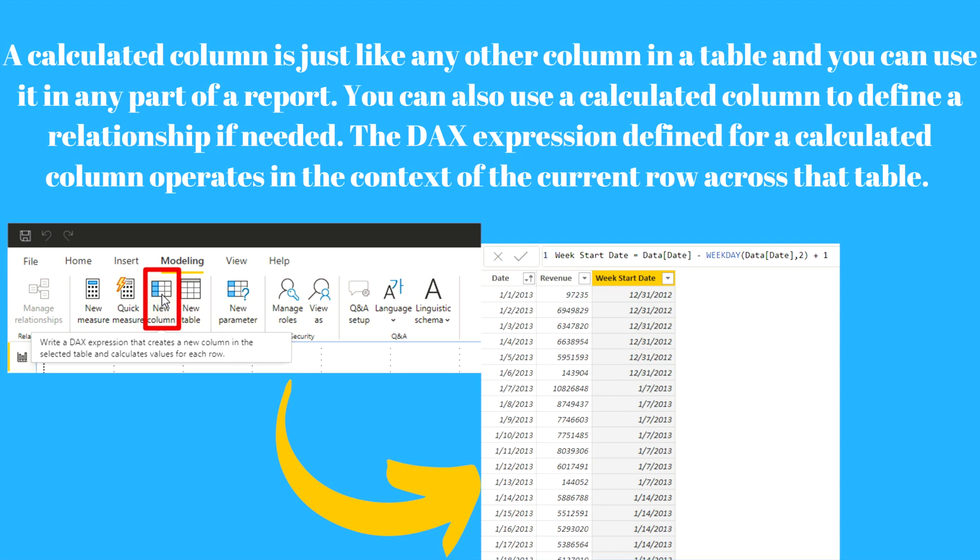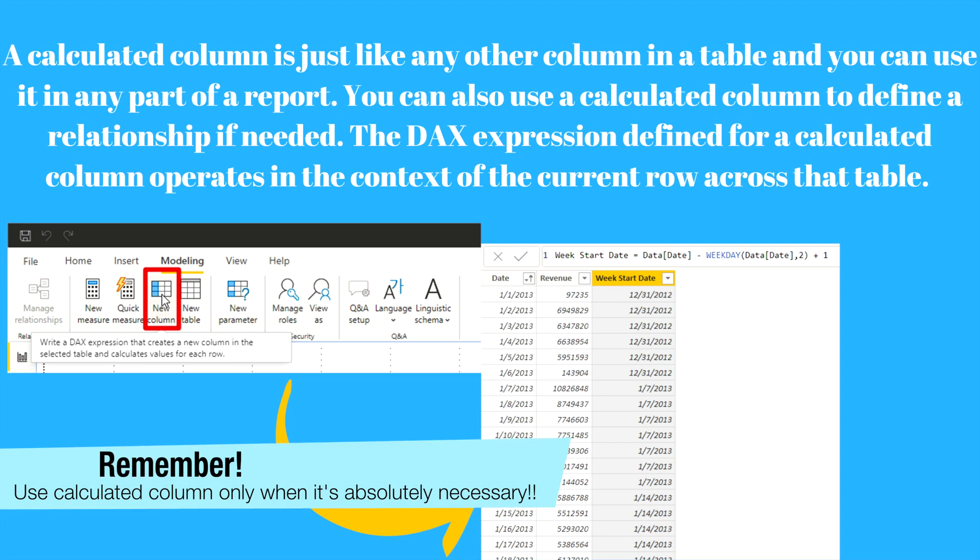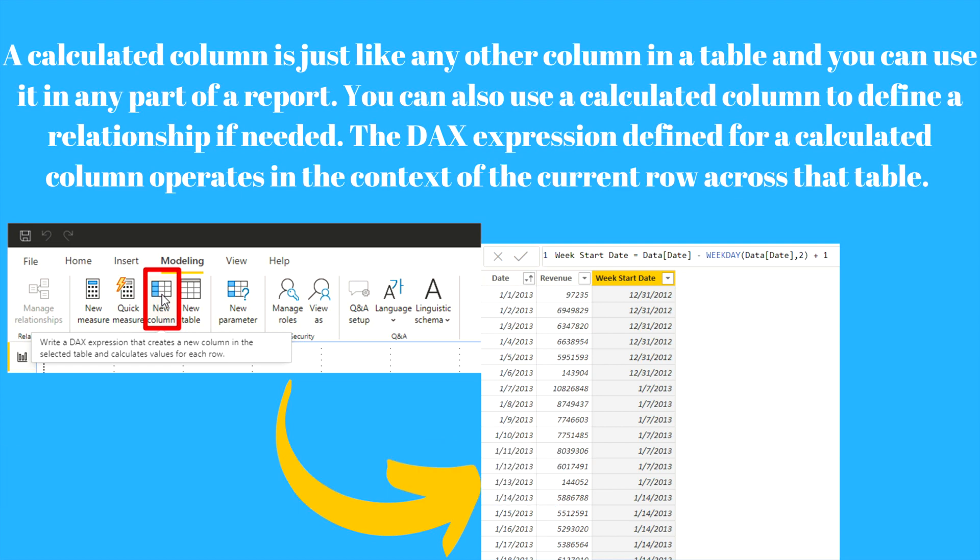There is one very important point to remember: if you have a complex formula for a calculated column, you might be tempted to separate the steps of a computation in different intermediate columns. Although this technique is useful during project development, it is a bad habit in production because each intermediate calculation is stored in RAM and wastes precious space. Please try to avoid many intermediate steps as much as possible. On your screen you can also see how you can create a calculated column into your Power BI reports. During the demo I'm going to show you how to do that.